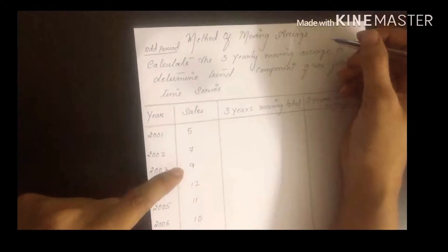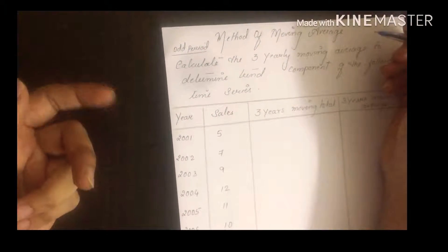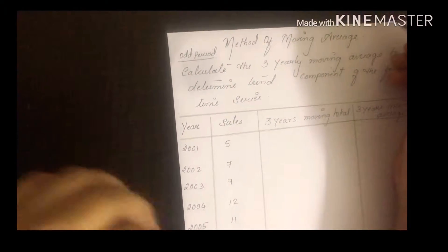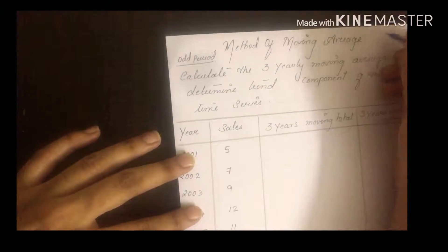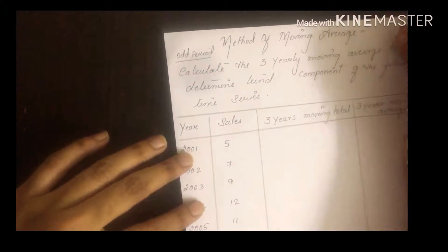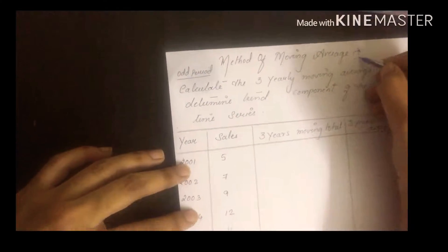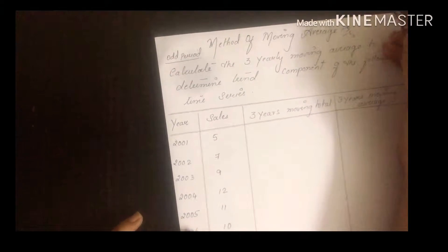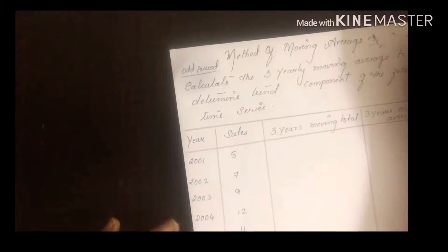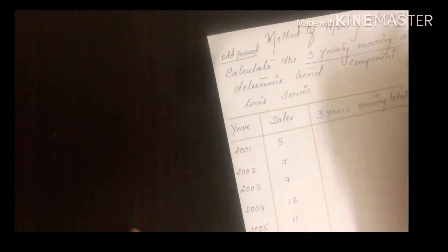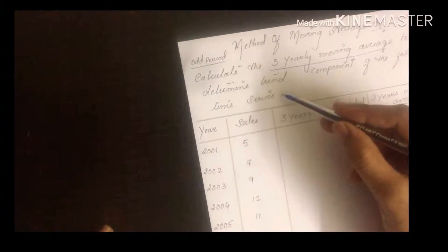In my previous video I explained two methods - graphical method and semi-average method. Now let's see the method of moving average. Here we're going to do a problem related to odd period method and even period method. Odd period method of moving average is a number not divisible by 2, like 3, 5, or 7 years. Even numbers divisible by 2 can be 4 years. We'll study 4-year moving average. Let's see an example for 3 years moving average. Calculate 3 years moving average to determine the trend component of the following time series.